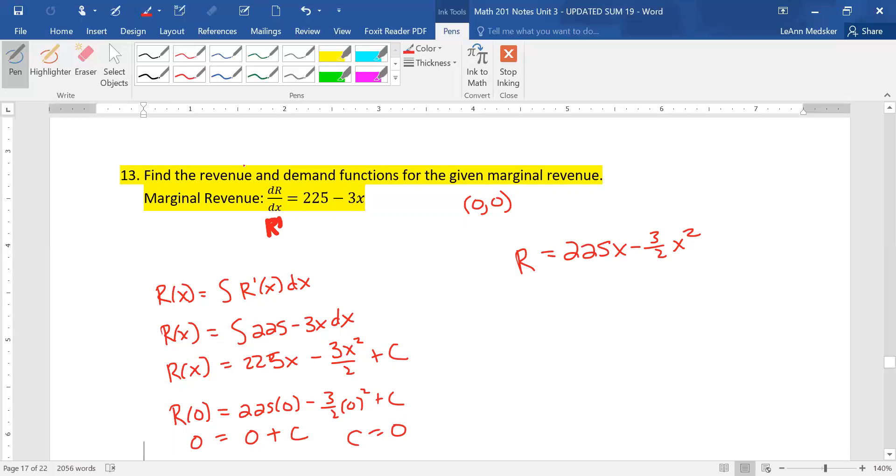So the actual revenue function is 225x minus three halves x squared. They also asked me for the demand function. Remember that revenue is just x times p. So normally we've been finding revenue by multiplying our p function by x. This time we want to find p by dividing revenue by x. So little p is going to be 225x divided by x would just be 225. And this one will lose an x as well. So this would just be x to the first. So there I have both my revenue and my demand function.